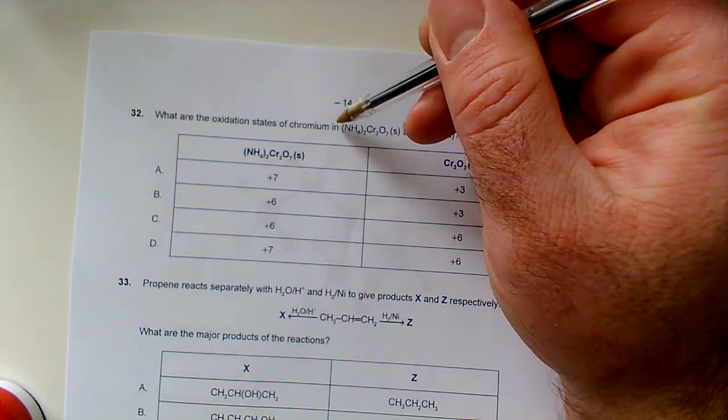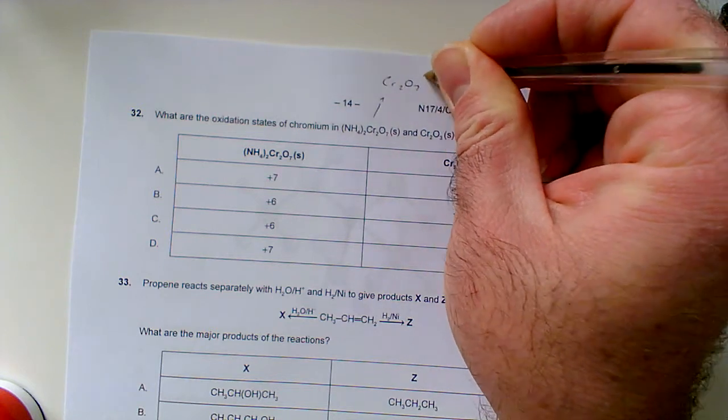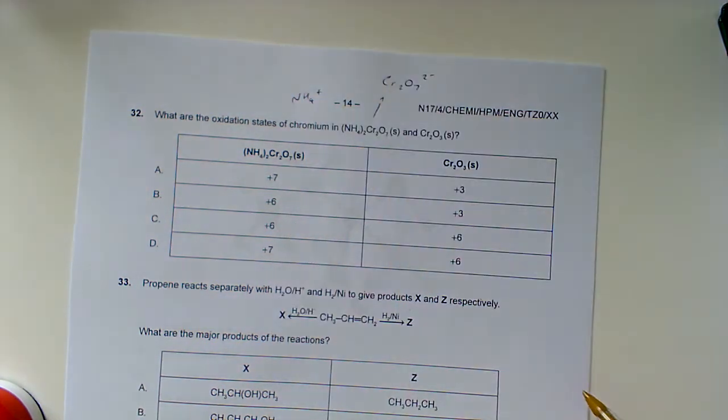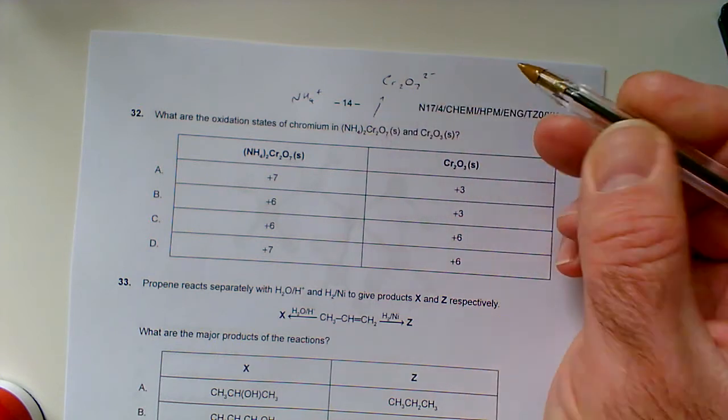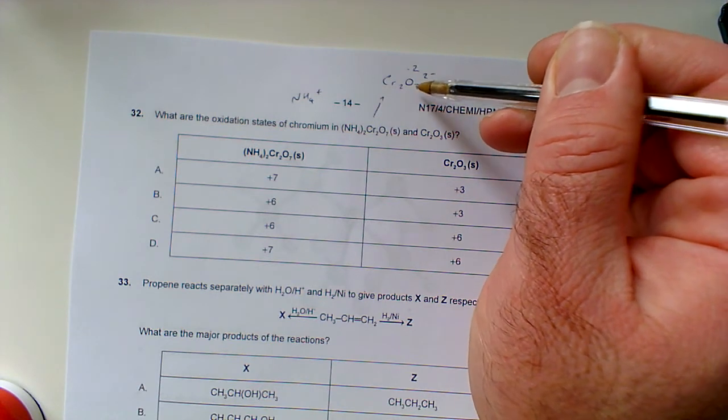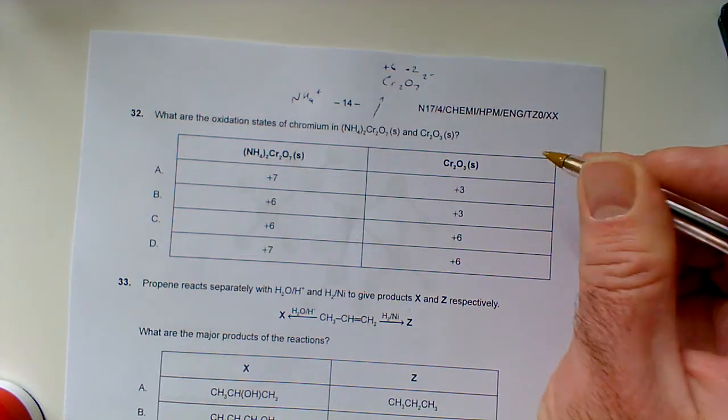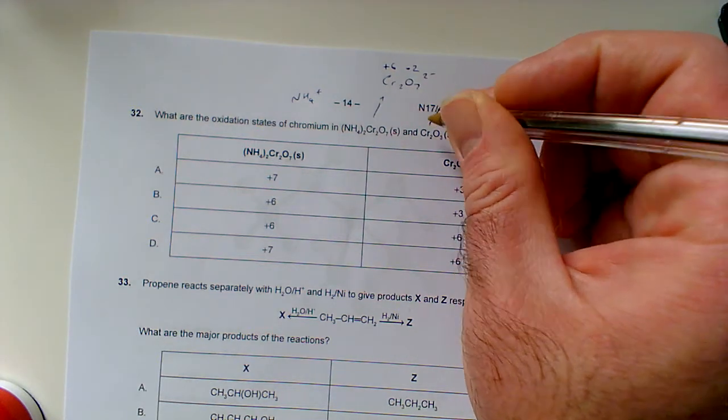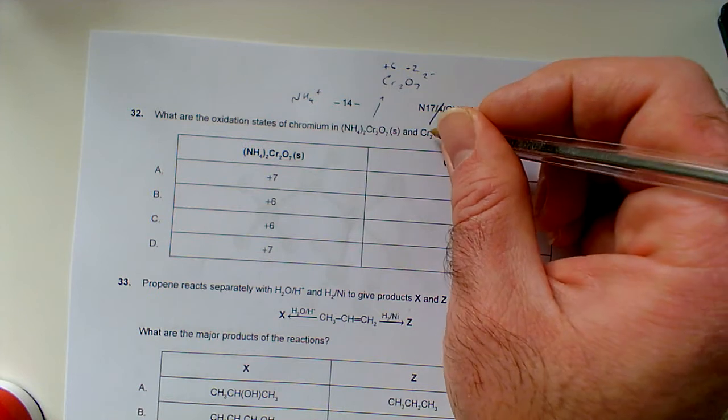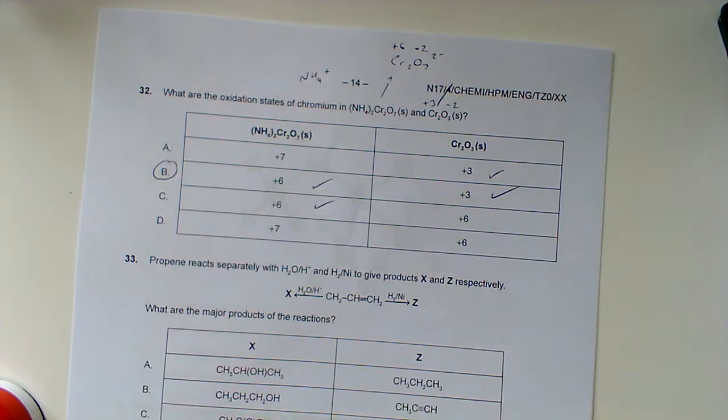Question 32: What are the oxidation states of chromium in ammonium dichromate and chromium oxide? NH4+ has a one plus charge, two of them, so this must be Cr2O7 2-. Oxygen is -2, seven of them is -14. We have a 2- charge overall, so something must bring it back by +12. Plus 12 divided by two chromiums is +6 each. For chromium oxide: 3 times -2 is -6, it's neutral overall, so the chromiums must bring it back by +6 to 0. Plus 6 divided by 2 is +3 each. So +6 and +3, which is B.